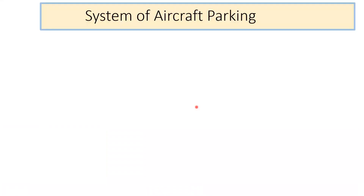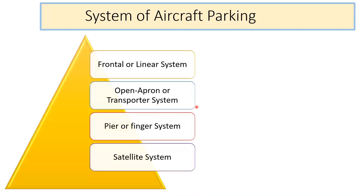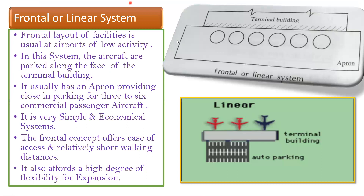In this lecture we'll see what are the systems of aircraft parking. We have four different systems: the first is called the frontal or linear system, the second is the open apron or transporter system, the third is the pier or finger system, and the last one is the satellite system.